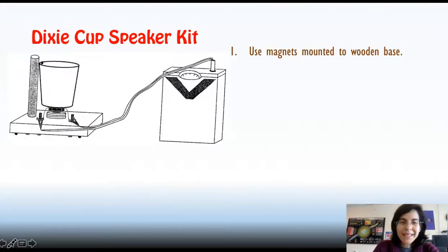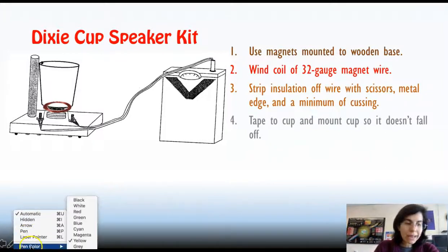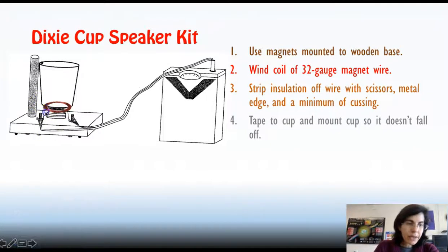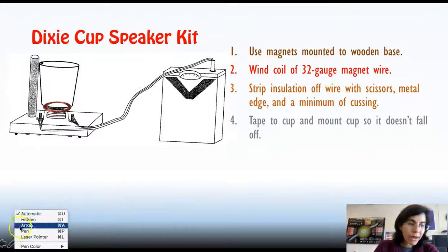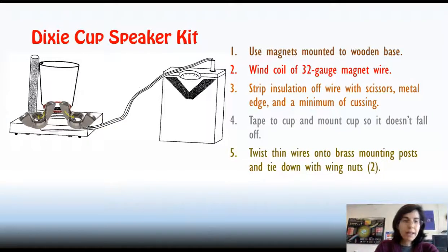Your magnets will be mounted to a wooden base so they don't fall off. And you'll wind a coil of wire to sit on top of them. Then you'll have to strip the insulation off the wire, the most time consuming part of your project. And once that's done, you'll be ready to attach the wire to a circuit. You'll take the uninsulated ends and tie them around your brass mounting posts to make a better connection.